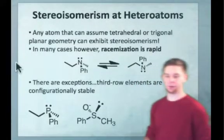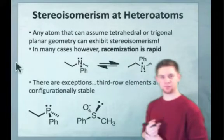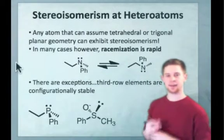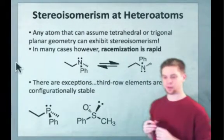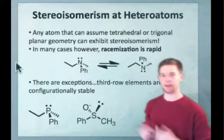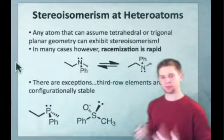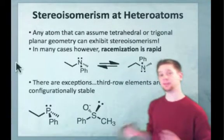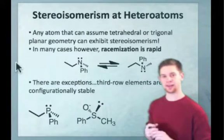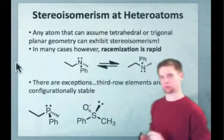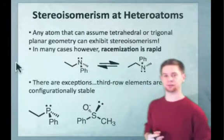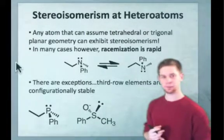If you really think about stereoisomerism, you'll realize that it's a property of shape. It's not strictly a property of stereocenters that are carbon or asymmetric carbon atoms. Because it's a property of shape, in theory, any molecule or any atom that can assume a tetrahedral or trigonal planar geometry can exhibit stereoisomerism. And we see this in practice.